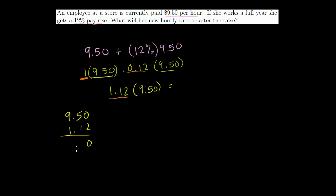So 9.50 times 1.12. 2 times 0 is 0. 2 times 5 is 10. 2 times 9 is 18 plus 1 is 19. And we'll put a 0 here. 1 times 0 is 0. 1 times 5 is 5. 1 times 9 is 9. Let's put two 0's here. 1 times 0 is 0. 1 times 5 is 5. 1 times 9 is 9. And now we can add. The 0's add up to 0. 9 plus 5 is 14. 2 plus 9 is 11 plus 5 is 16. 1 plus 9 is 10. And then we count the number of decimals. We have 1, 2, 3, 4 numbers behind the decimals. So in our answer we have to have 1, 2, 3, 4 numbers behind the decimal.